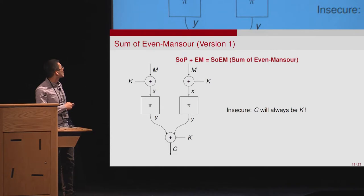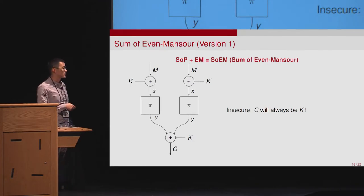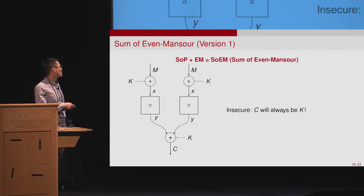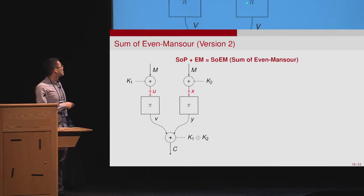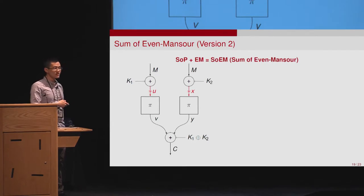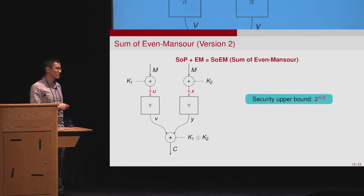The first variant is the Sum of Even-Mansour with two identical permutations and one single key. This clearly cannot work because the same Y cancels out and C will always equal the unused key. The second variant uses the same permutation but with two different keys; however, in this case, its security is only birthday-bound secure.